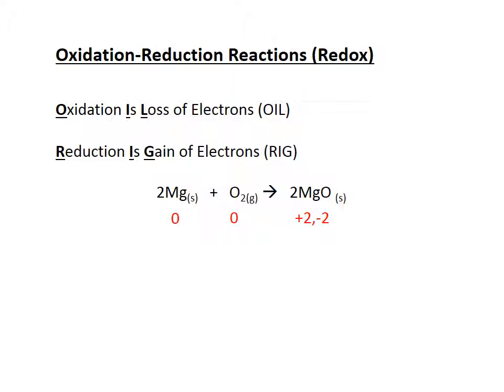Now I draw lines connecting each element and its charges. Magnesium goes from zero to plus two — becoming positive means it's losing electrons, so magnesium is oxidized. Oxygen goes from zero to minus two — gaining a negative charge means it has gained electrons, so oxygen is reduced. You'd likely have known magnesium was oxidized anyway, since oxidation often goes along with an increase in the proportion of oxygen in a molecule: magnesium had zero oxygens, and now it's paired with oxygen as magnesium oxide.